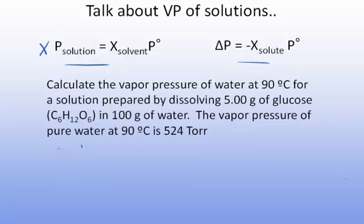So Raoult's Law states the vapor pressure of the solution, which is what we want to know. The question is what is the vapor pressure when you dissolve 5 grams in 100 grams? So that's the solution. It's going to equal the mole fraction, in this case of water, because that's our solvent, times the vapor pressure of water.